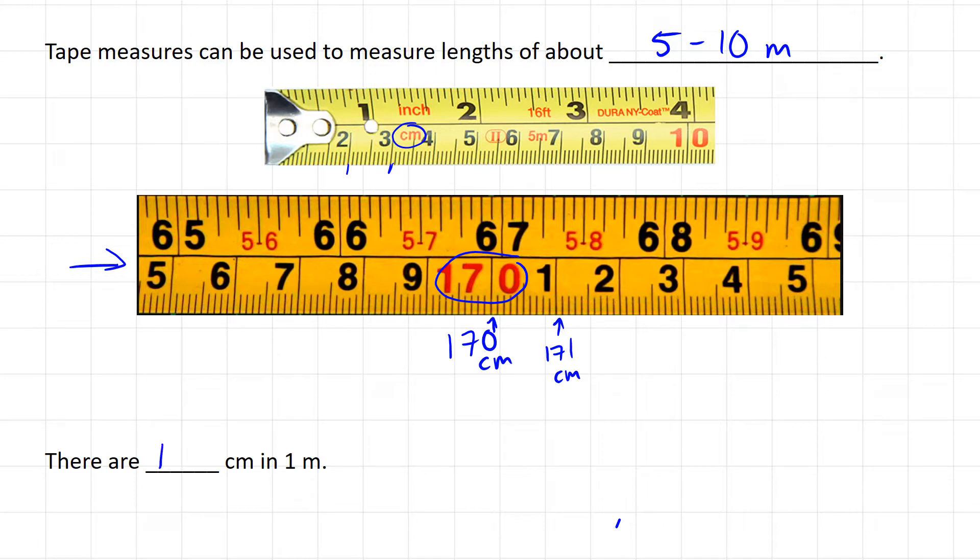There are 100 centimeters in one meter, so when we're at 170 centimeters, we're well over one meter of length.